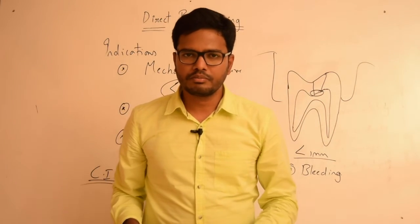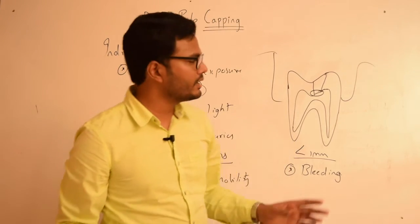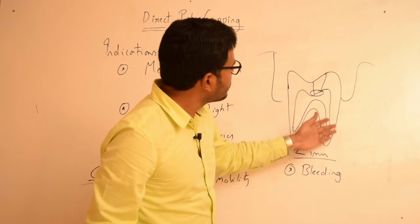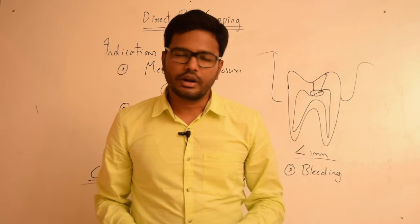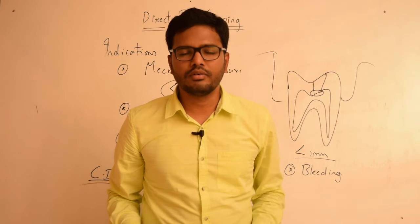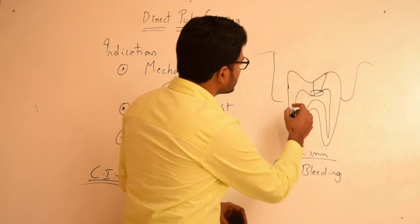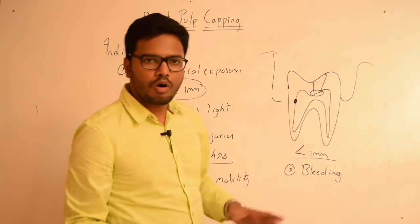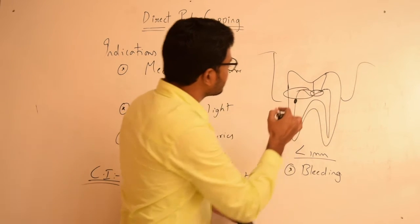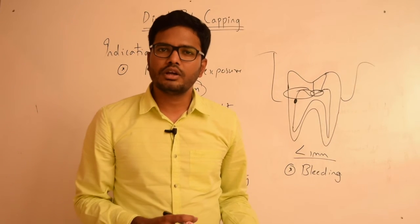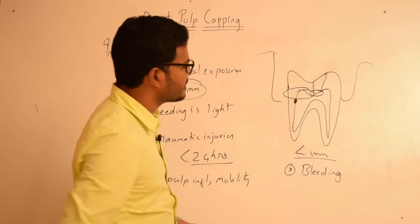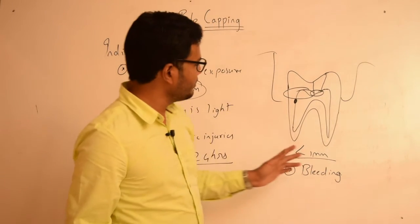Direct pulp capping is considered successful when pulp vitality is maintained, when there is tertiary or reparative dentin formation, and when there are no post-treatment symptoms such as pain, swelling, resorption, or any periapical changes radiographically. One important point: when there is pulpal exposure along the axial wall during cavity prep or due to trauma, the pulpal tissue coronal to this exposure is devoid of blood supply and eventually undergoes inflammation and necrosis. In these cases it is advisable to go for pulpotomy or pulpectomy rather than direct pulp capping.